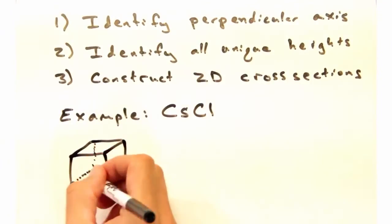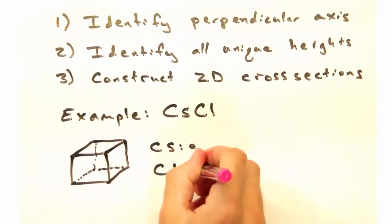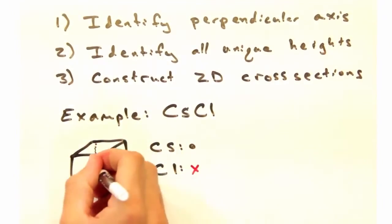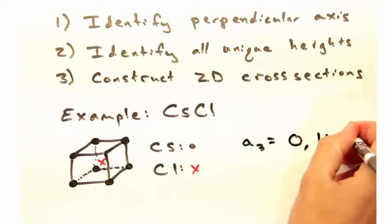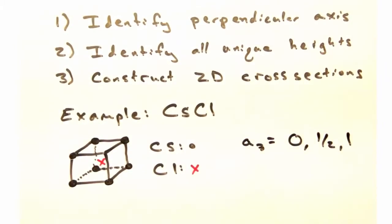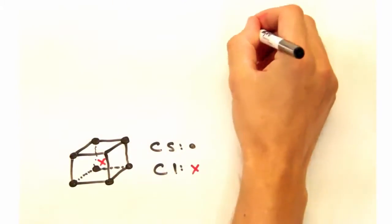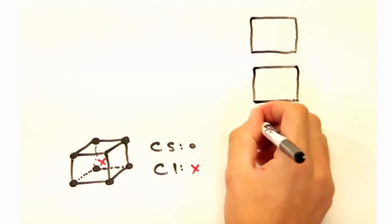Okay, let's start with a relatively simple example, cesium chloride. It has cesium atoms at all eight corners with a chlorine atom in the body center. Since we have atoms at A3 equals zero, a half, and one in reduced units, we'll create three cross-sections, one for each A3 height.